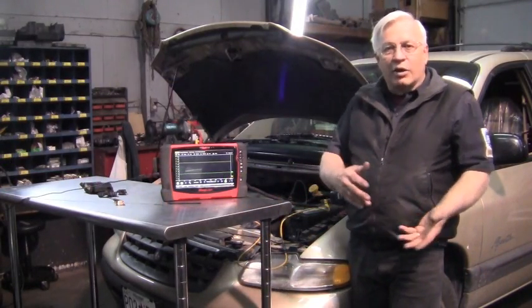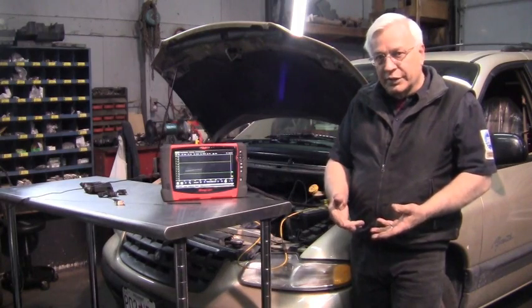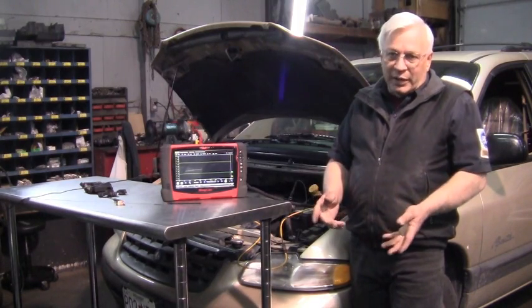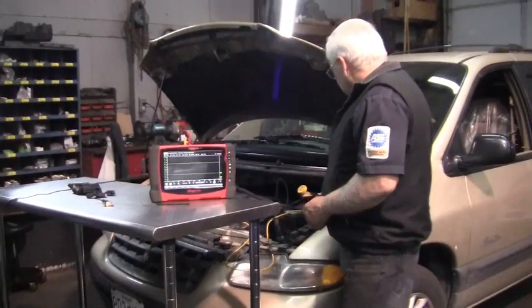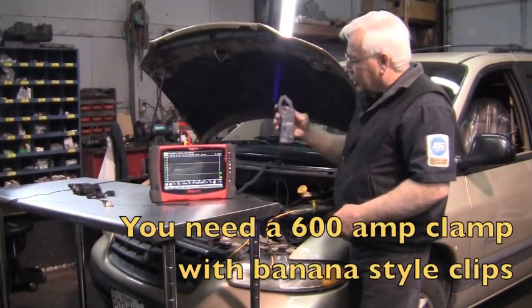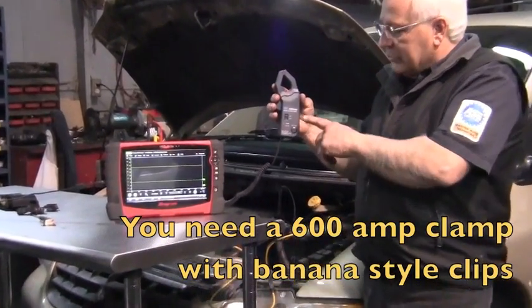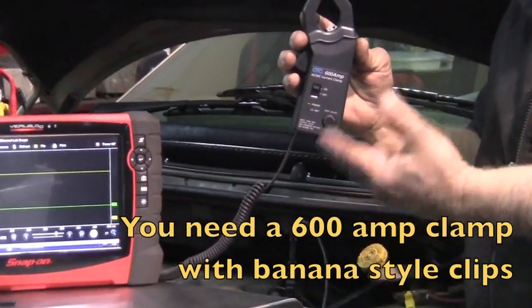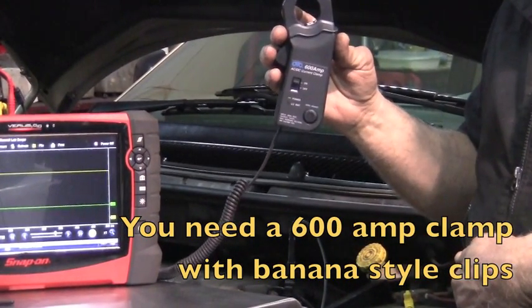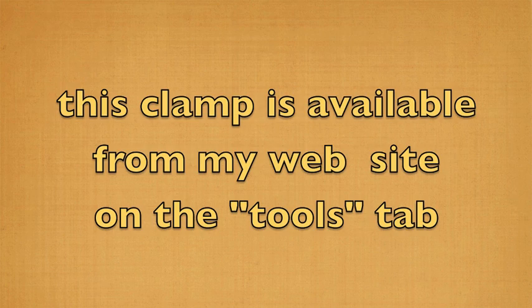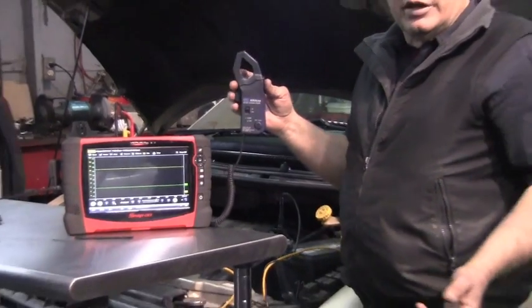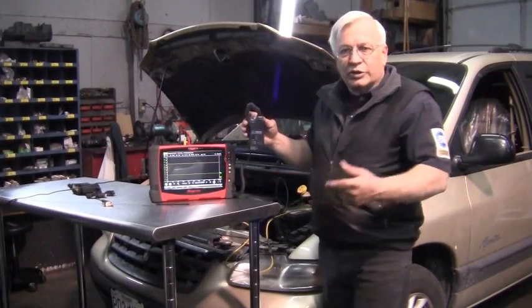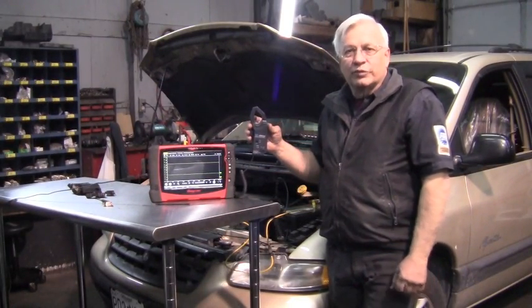Once again, this is a test to tell you how well or how healthy that starter is. Sometimes you can catch one about to fail. Now to do this test, you do have to have a high amp clamp, a 600 clamp, because the starter pulls many more amps than the low amp clamp can tolerate and report. So once again, with a two-channel lab scope, it's just one more tool in your arsenal for diagnostics.